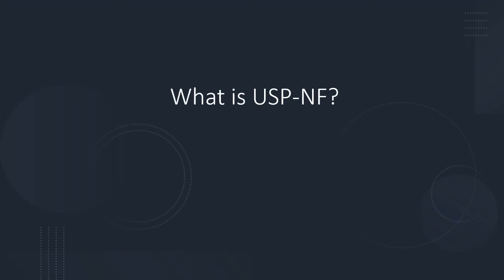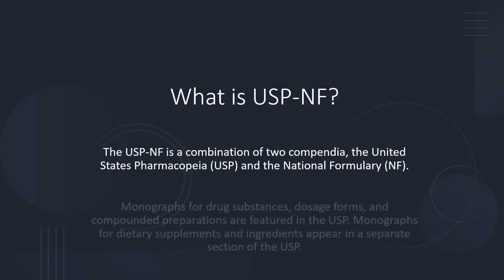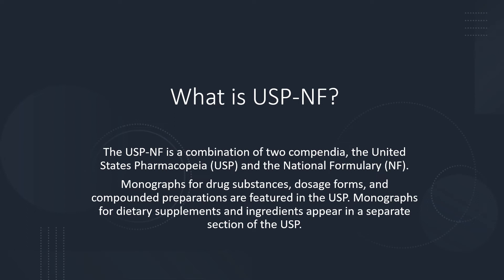The USP NF is a combination of two compendia: the United States Pharmacopoeia (USP) and the National Formulary (NF). Monographs for drug substances, dosage forms, and compounded preparations are described in the USP, while monographs for dietary supplements and excipients are described in a separate section called the NF.